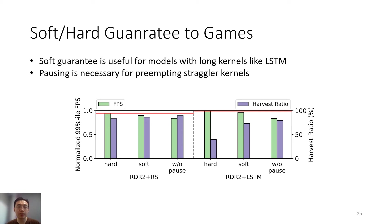The soft guarantee from PaddleFish helps improve the GPU harvest ratio for models like LSTM with long computation kernels. By allowing one or two frames to be dropped from games, PaddleFish can provide longer idle GPU periods for LSTM, so that its long kernels can fit. A soft guarantee allows LSTM to harvest about 40% more GPU cycles than the hard guarantee, only reducing game FPS by a little — acceptable for RPG or pixel games without strong FPS requirements. However, if we remove the preemption mechanism from PaddleFish, we observe a clear FPS drop because straggler kernels run longer than expected, proving the necessity of the preemption mechanism.